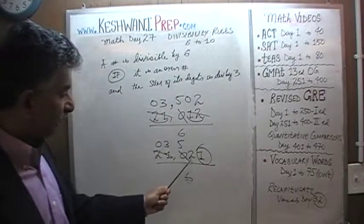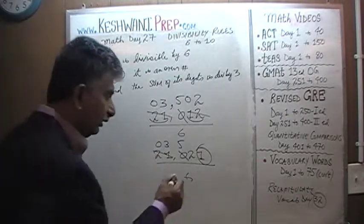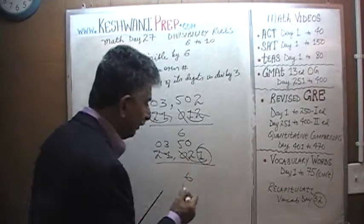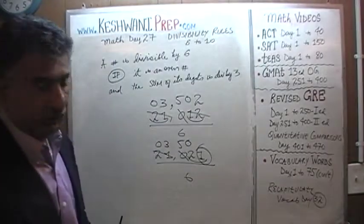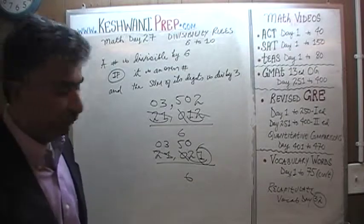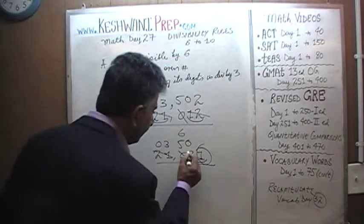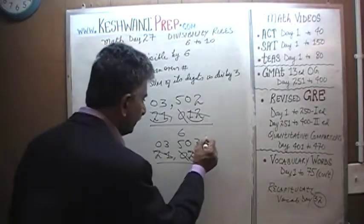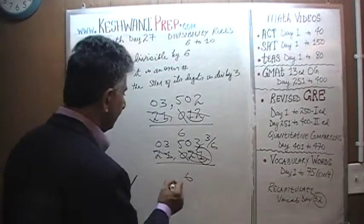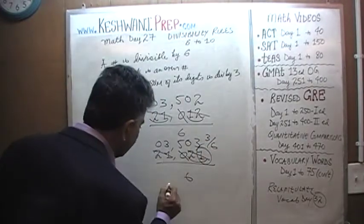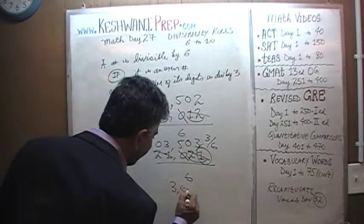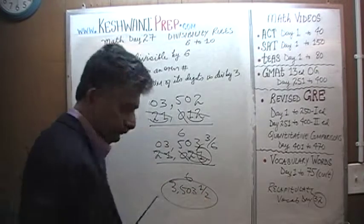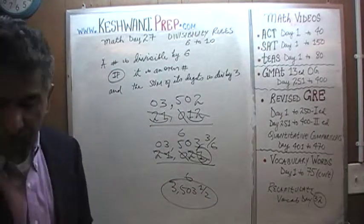Working out 21,021 divided by 6 to confirm: 2 has no 6s, so 2 joins 1 to become 21. 21 has three 6s, with a remainder of 3, which is to be divided by 6. The answer is going to be 3,503 and a half — it is not evenly divisible by 6.